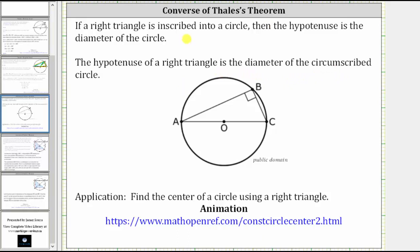A nice application of the converse of Thales' Theorem allows us to find the center of any circle using a right triangle. And let's look at an animation of this.